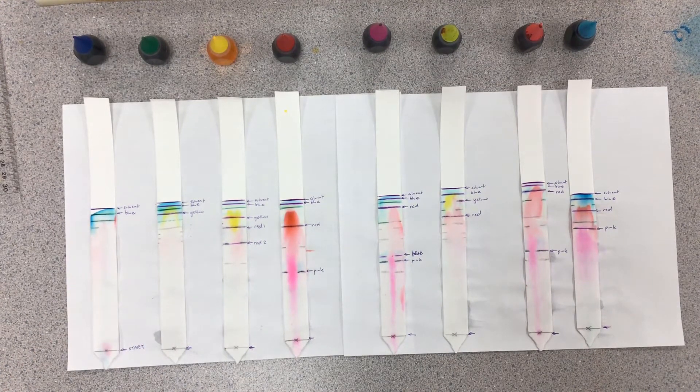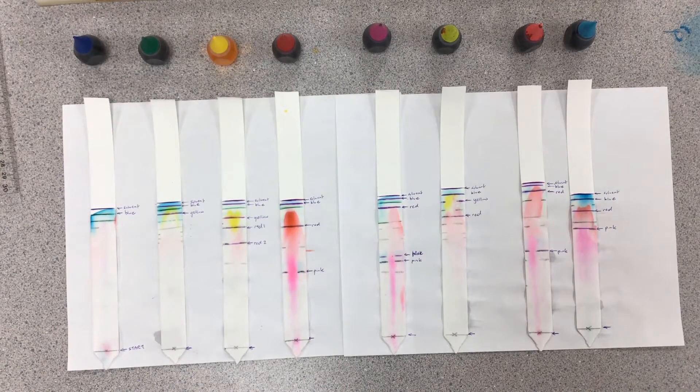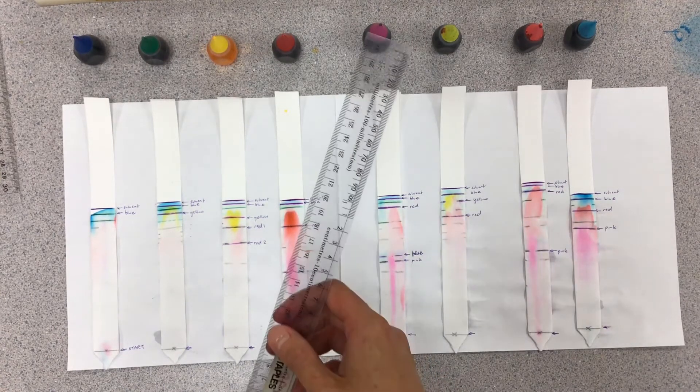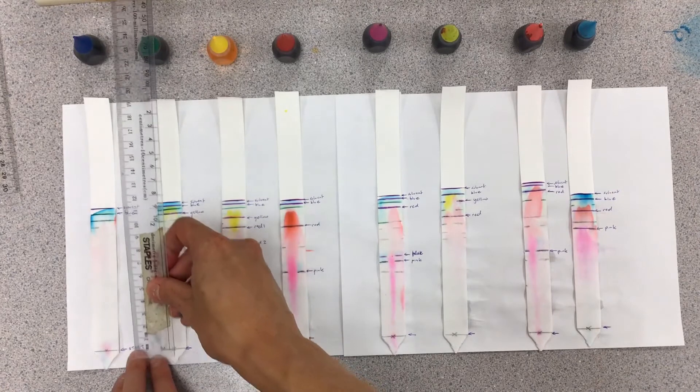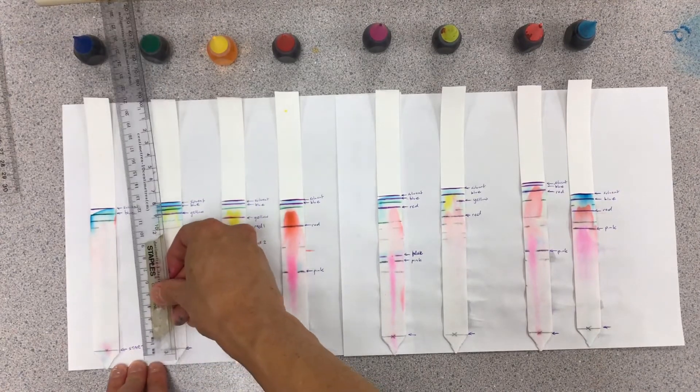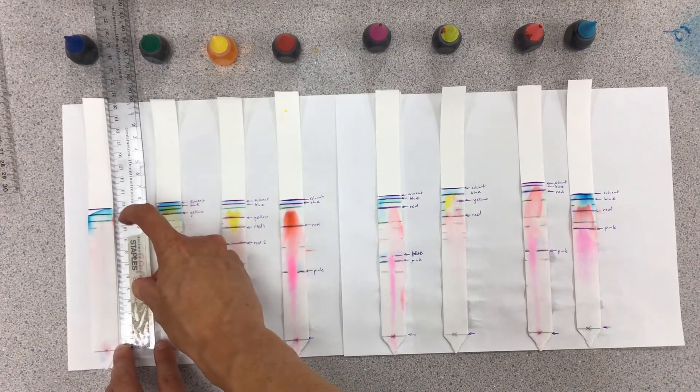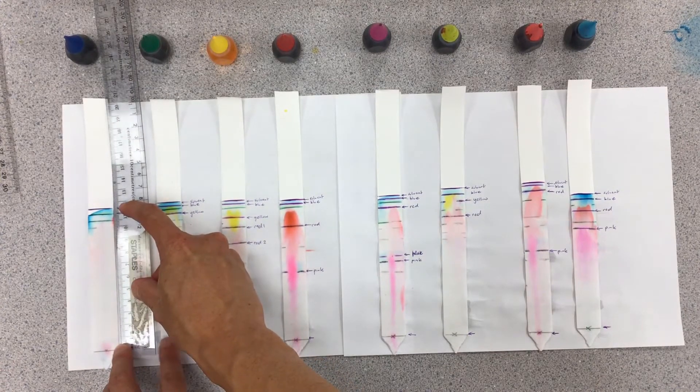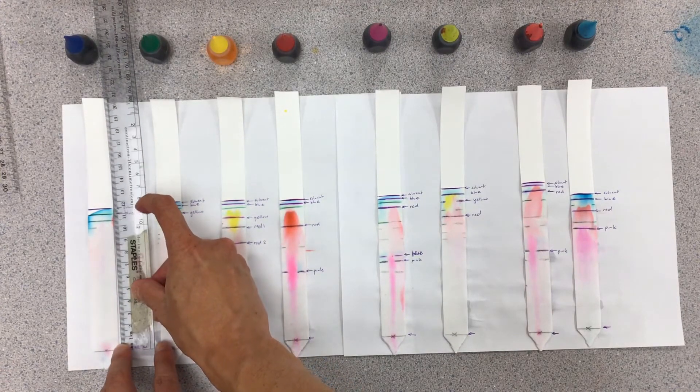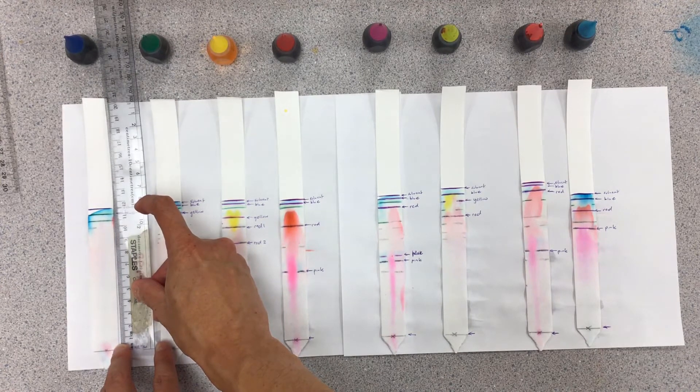We can calculate a value called an RF value. For the RF value, we just need to take two measurements of distance. I start off with this first one here, marking off the zero mark at the starting line. I measure the solvent to be roughly about 11.5, and then we compare how our solute is in comparison to that solvent.